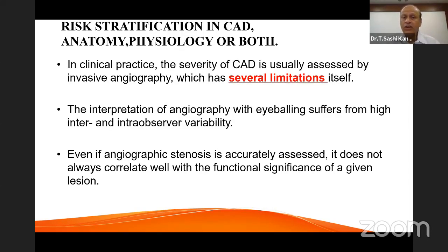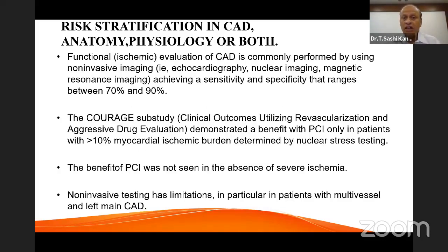In clinical practice, the severity of coronary artery disease is usually assessed by invasive angiography, which has several limitations. Interpretation by eyeballing suffers from high inter- and intra-observer variability, and angiographic stenosis does not always correlate with functional significance. Functional evaluation is becoming increasingly important and can be achieved with echocardiography, stress nuclear scan imaging, and MRI, to about 70–90% accuracy.